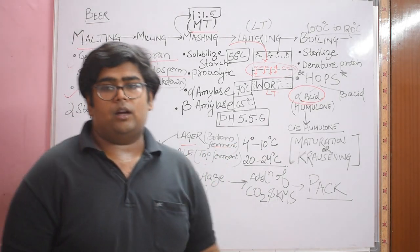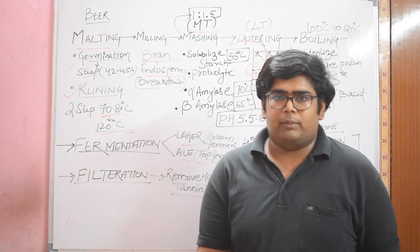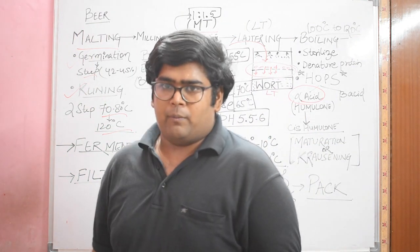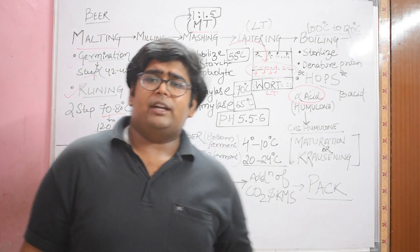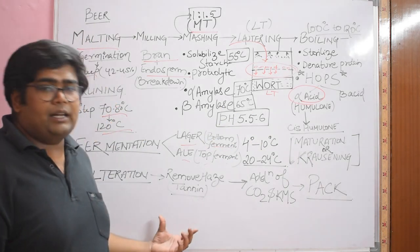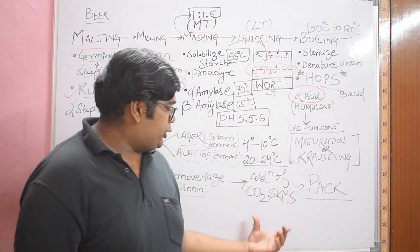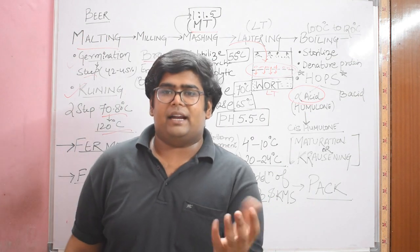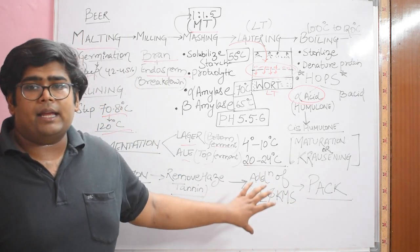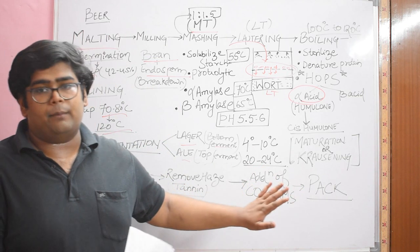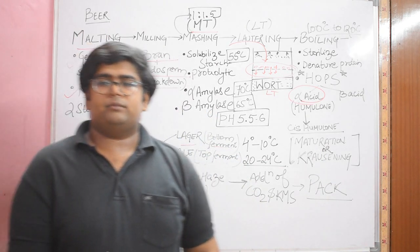Beer is a carbonated beverage, and this CO2 is produced during fermentation also. But if you need more CO2 while you are packing your beer, you can add more CO2. We do that after filtration. After filtration, your beer is called the bright beer. A preservative KMS is added.